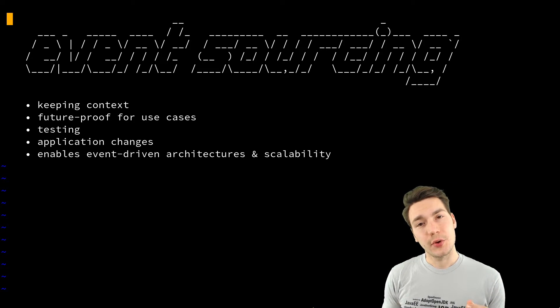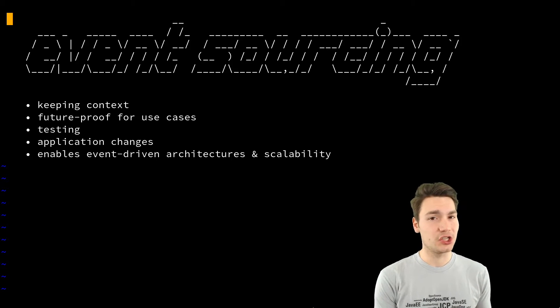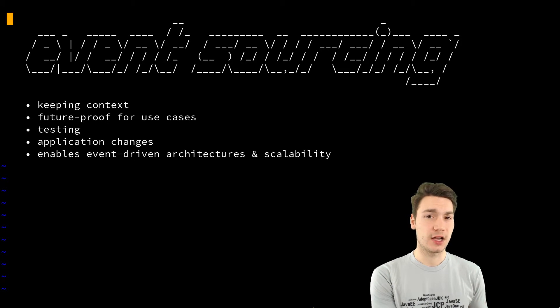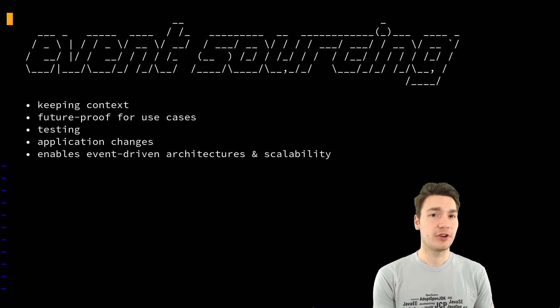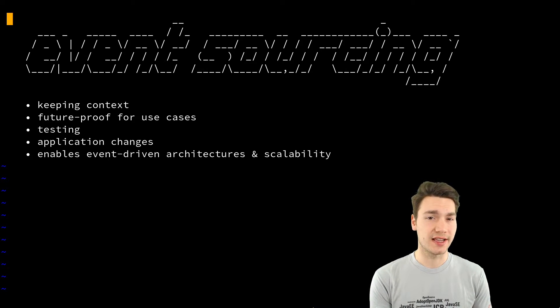If you have a current state of the application only, then you lose the context of how you got there. For example, for a money transaction, if you have a current balance of $100 on your account.